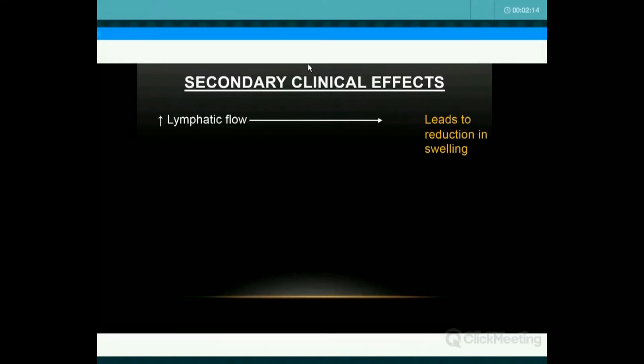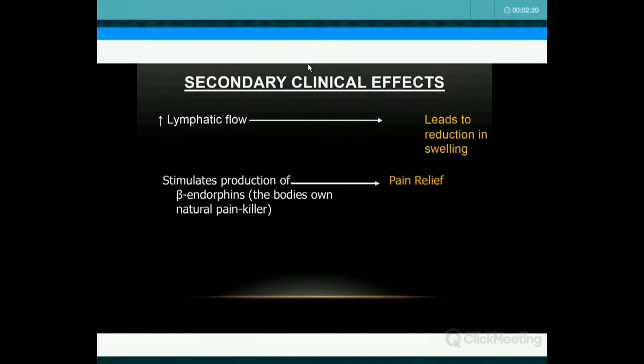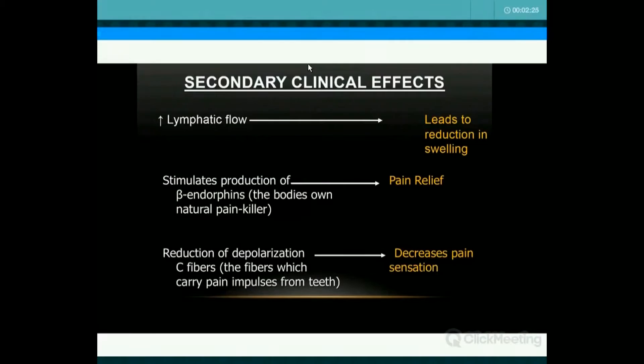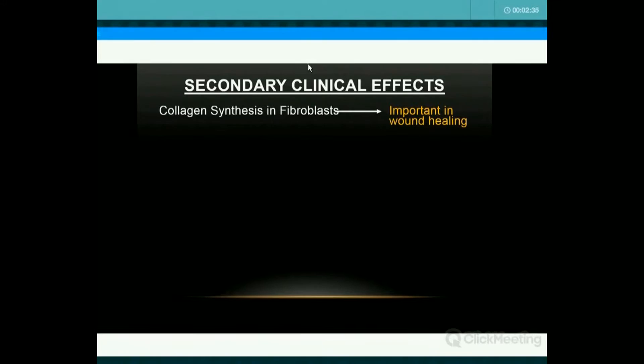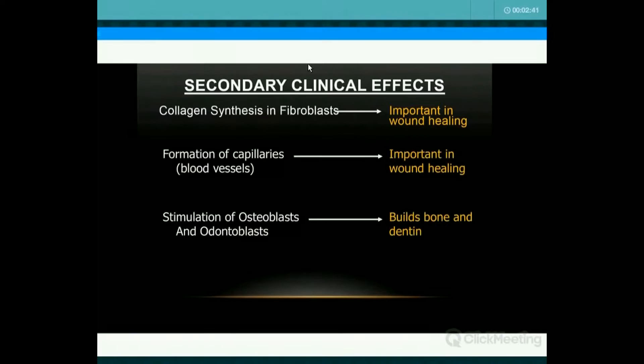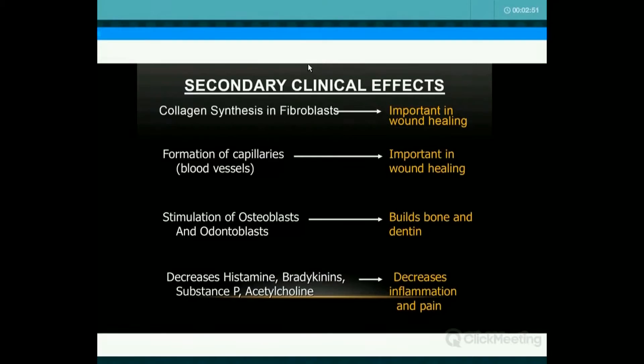We get increased lymphatic flow, which leads to reduction in swelling and faster healing. It stimulates beta endorphins, the body's own painkillers. It affects the depolarization of C fibers, so there's less pain carried from the teeth — those are the non-myelinated fibers from the dental pulp. It stimulates fibroblasts for wound healing, which creates the soft tissue. We get formation of capillaries in the blood vessels for wound healing. It stimulates osteoblasts for building bone and odontoblasts for secondary dentin. It also decreases the inflammatory response, so you get less pain and inflammation.